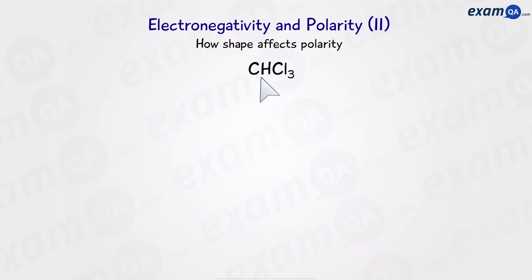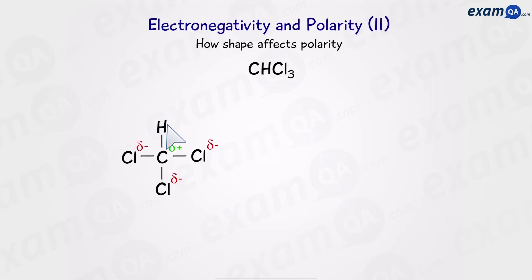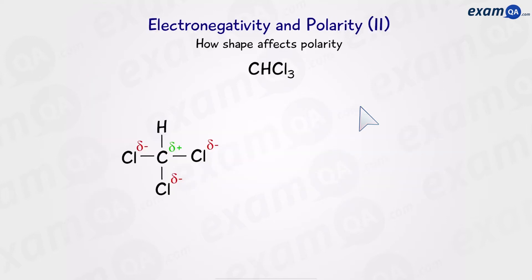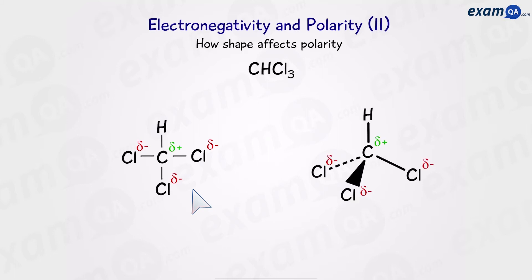Let's look at another example: trichloromethane. All that's happened here is one of the chlorines has swapped for a hydrogen. The chlorine-carbon bonds are always going to be polar, as we know from the previous example. But what about the carbon-hydrogen bond? Looking at the Pauling scale, hydrogen is 2.1 and carbon is 2.5, giving a difference of 0.4, which is not enough to classify this as a polar bond. So the carbon-hydrogen bond will not have any charges. We do have at least some polar bonds, so now we have to draw this in its three-dimensional shape, which is still going to be tetrahedral.